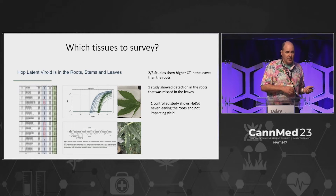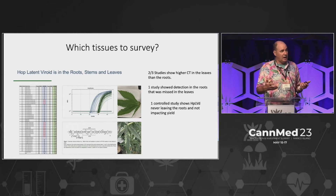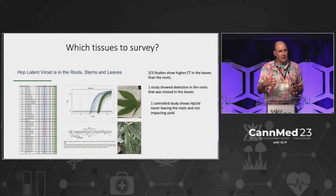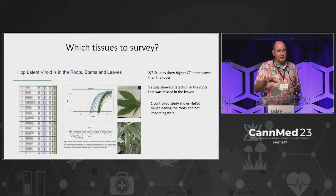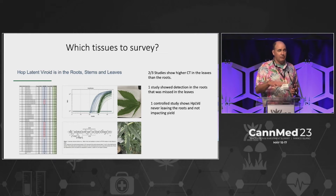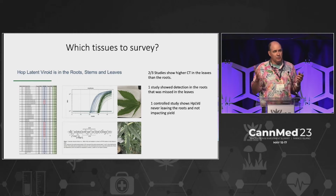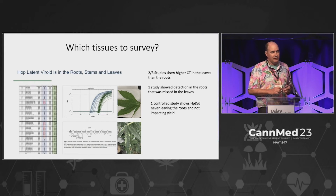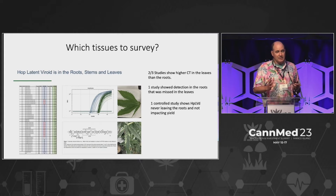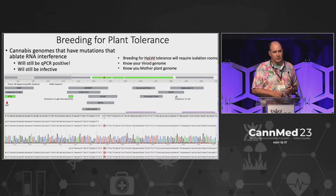The third question is where do you survey in the plants? This has evolved over time as we've learned more. We've been involved in studies showing higher viroid loads in the leaves than in the roots, and also in one study showing higher CTs in the roots where things were completely missed in the leaves. I'm going to touch on another study showing some plants that only harbor this in the roots and don't even spread it out to the leaves, which may shed light on some of the tolerances this is having. So testing both tissues probably makes a lot of sense.